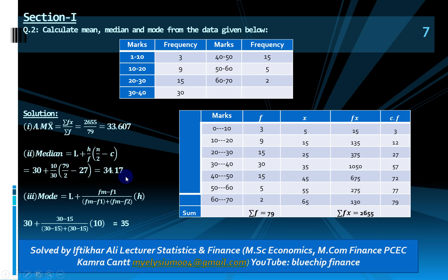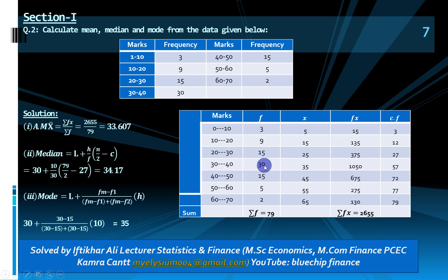For mode, the modal class is the class with maximum frequency. Maximum frequency is 30, so the same modal class is selected. L is 30, fm (maximum frequency) is 30, f1 is 15, f2 is 15, h is 10. Putting these values into the formula gives mode = 35.